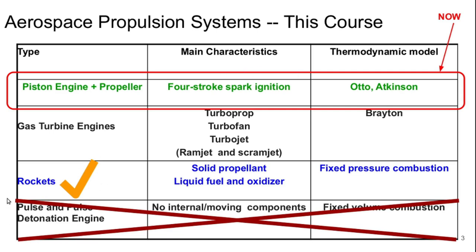One that we're not going to talk about in this course is pulse and pulse detonation engines. These are sort of experimental ideas that are not still widely used. The other two are gas turbine engines and piston engines, or spark ignition engines, coupled with propellers. We're going to talk about spark ignition engines in this lecture and the next one. In lecture 6, we'll talk about the performance of propellers, and then for the remainder of the course, we'll focus on gas turbine engines.